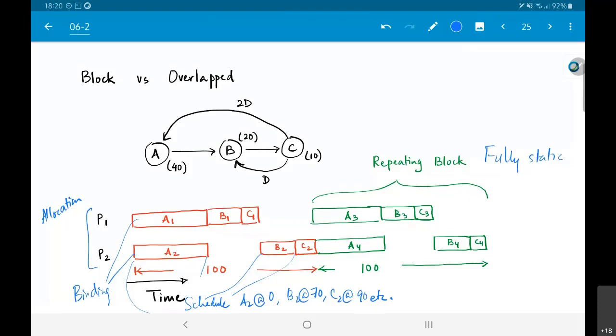Now, of course, the problem that you can see over here is it's wasteful. The latency is 100, but ideally I would have liked the time for finishing 2 iterations to be just 70 time units so that I can get to my average iteration period of 70 divided by 2 is 35. Right now what I am seeing is that 2 iterations finish within 100 time units. Therefore, average iteration period is 50.